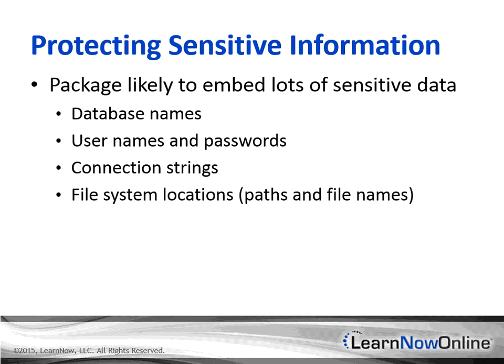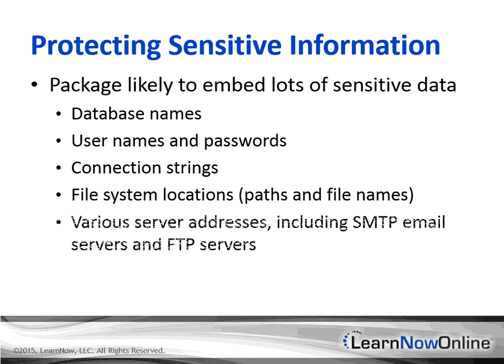File system locations — things like paths and file names — are also very useful information. If an attacker knows that you have a C:\customers folder and you store some kind of important customer information there, that could be a pretty juicy target. And then there are various server addresses, including SMTP email servers and FTP servers. Think of the problems an attacker can cause if they know more about the servers in your network.